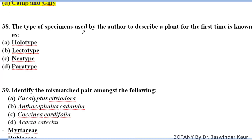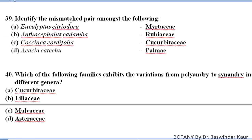The type specimen used by the authors to describe a plant for the first time is known as holotype. When a particular plant is described by an author for the first time, the type specimen used is called holotype.